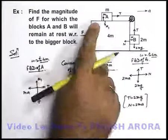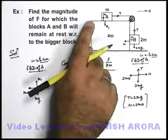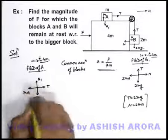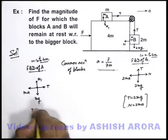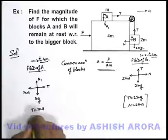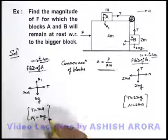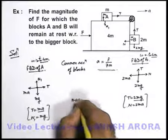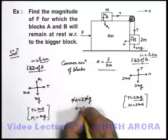Now, if we observe from the 4m block, as they are moving together with 4m, block A also appears to be at rest. Since it appears to be at rest, we write T equals ma, and N1 equals mg. From these equations, since T equals 2mg and T also equals ma, we equate the two: ma equals 2mg. m cancels out and the value of acceleration a is 2g.